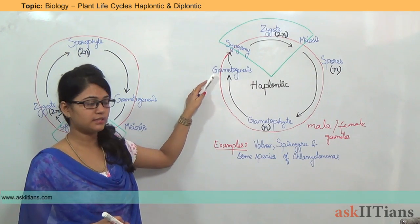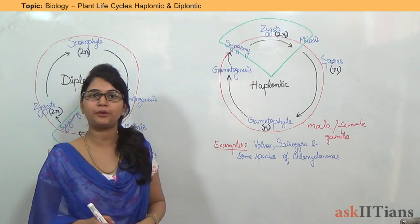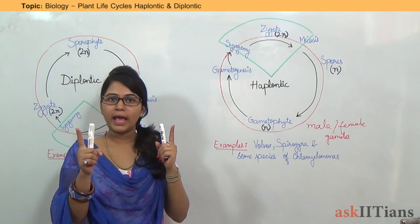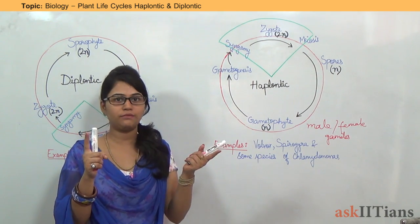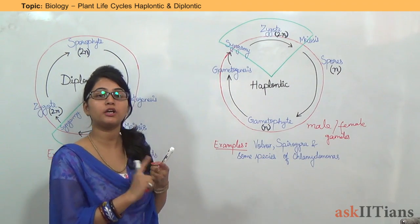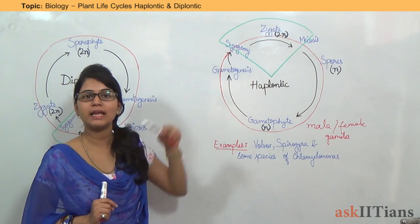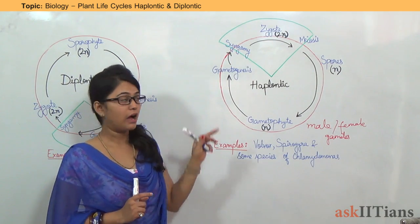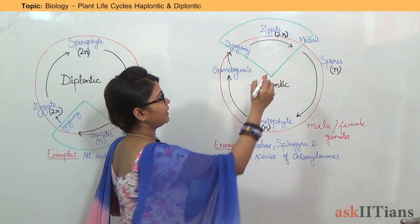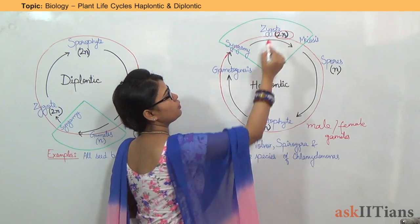After gametogenesis, when these male and female gametes are produced, they will fuse together — one male gamete and one female gamete. They will fuse together through the process known as syngamy. After their fusion, they will form a zygote. The zygote is diploid — it is 2N.